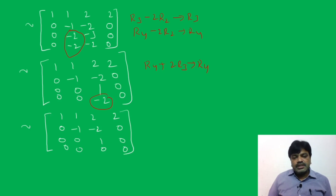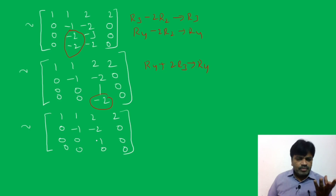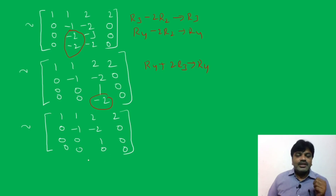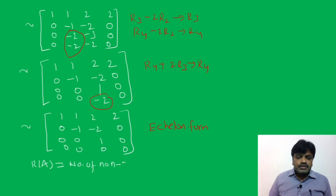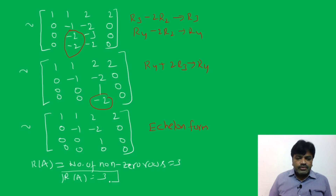We have now obtained the echelon form. It satisfies all three properties of echelon form. Rank of A equals the number of non-zero rows. We have 3 non-zero rows, so rank of A is equal to 3.